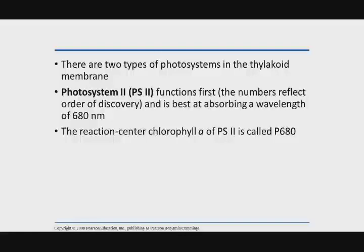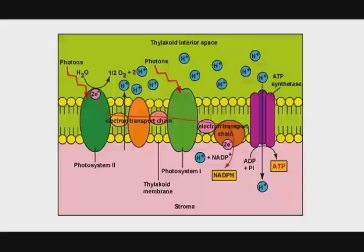The first photosystem to be found was the second photosystem in the process. So photosystem II is the starting point, and it's also called P680 because the special pair absorbs light best at 680 nanometers. You can see photosystem II here labeled very clearly.